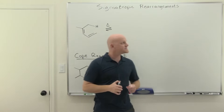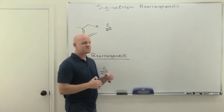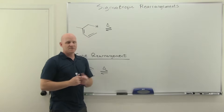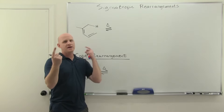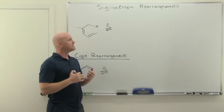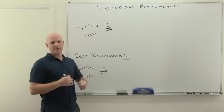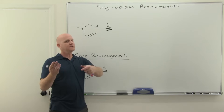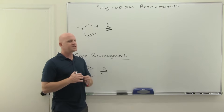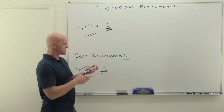So we'll take a look at sigma-tropic rearrangements. You're going to break a sigma bond and form a sigma bond in every single sigma-tropic rearrangement, and where those occur is going to lead to some numerical notation, as we'll see.